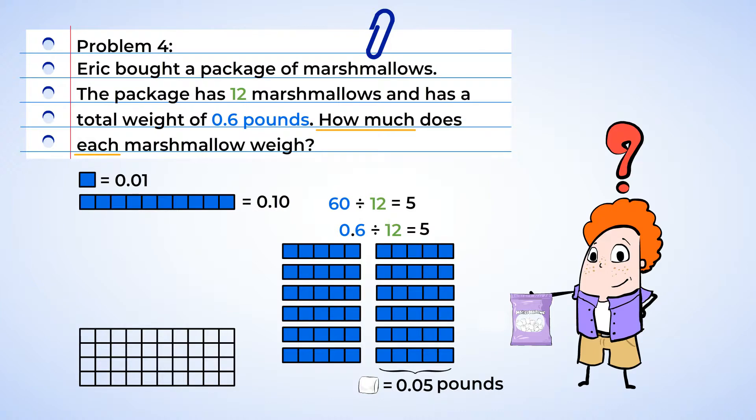Since the decimal moved two places to the left to make sixty into six-tenths, it has to move to the left two places in the answer. This turns five into five-hundredths.